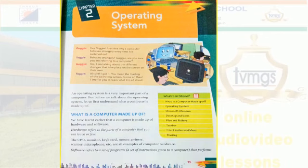An operating system is a very important part of a computer. But before we talk about the operating system, let us first understand what a computer is. A computer is an electronic device which takes input from the user — it runs on electricity — and according to that input, it provides us a proper output.